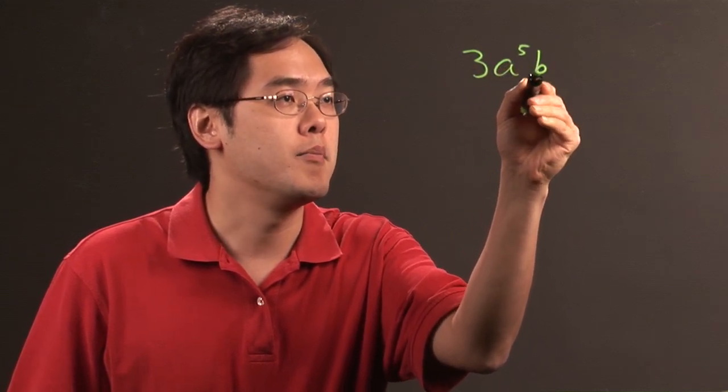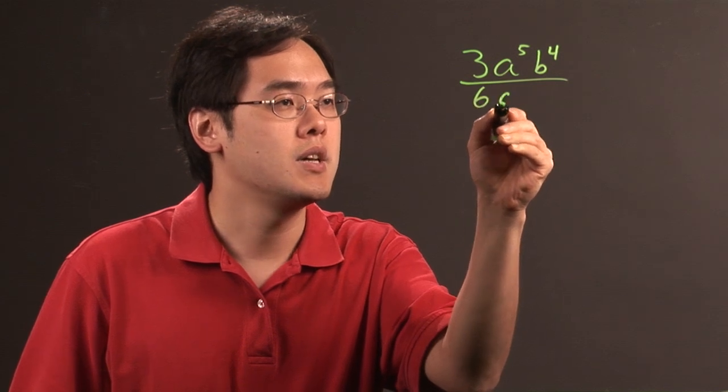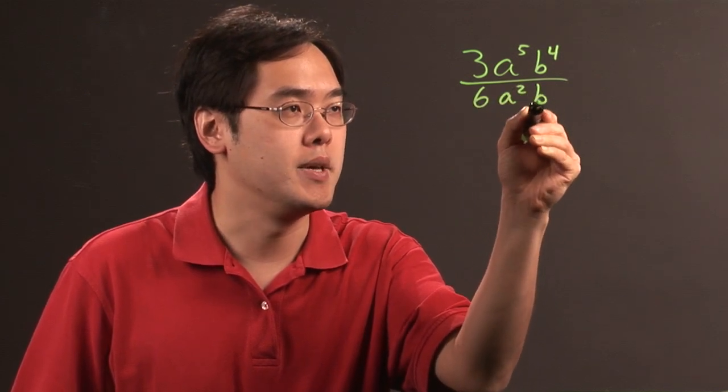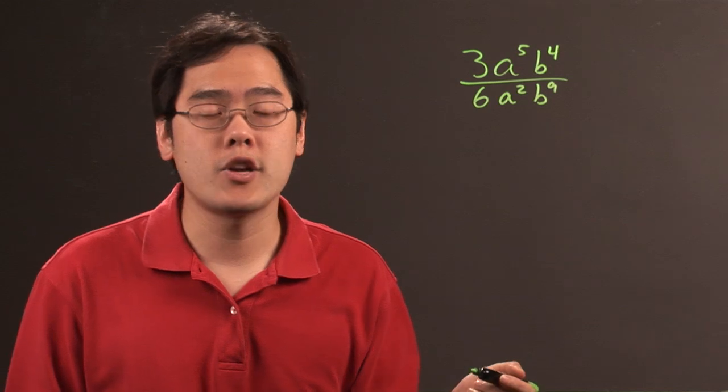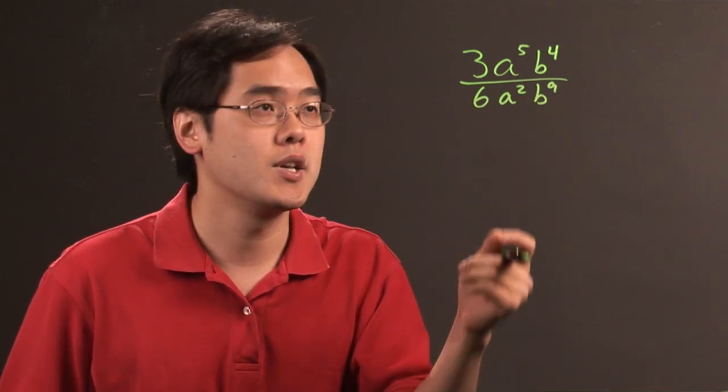For example, if you have something like 3a to the 5th b to the 4th over 6a squared b to the 9th, hypothetically, you can reduce algebraic expressions by simply reducing the numbers and the exponents, provided that they're at the same base.